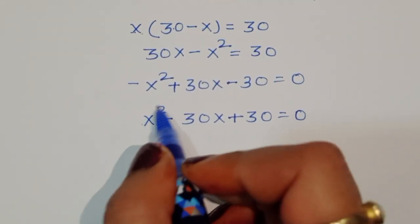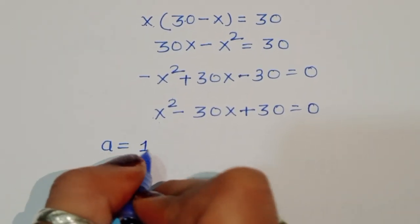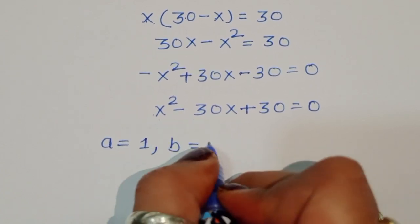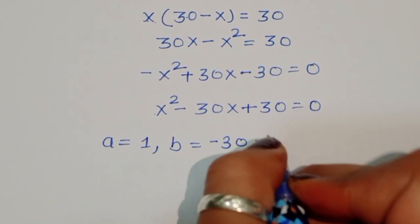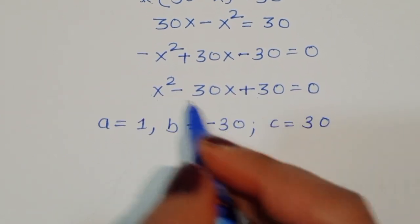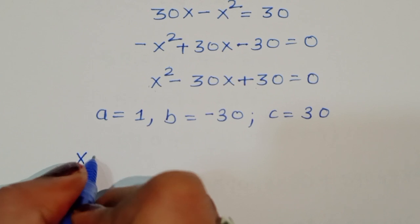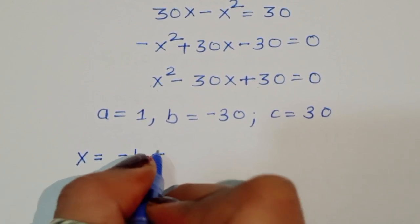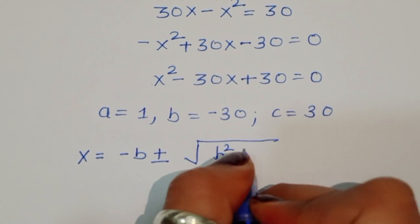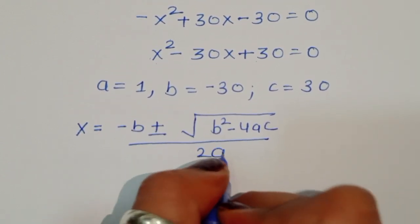The coefficient of x squared is a equals 1, b equals minus 30, and c equals 30. We now use the quadratic formula: x equals minus b plus or minus the square root of b squared minus 4ac, all divided by 2a.